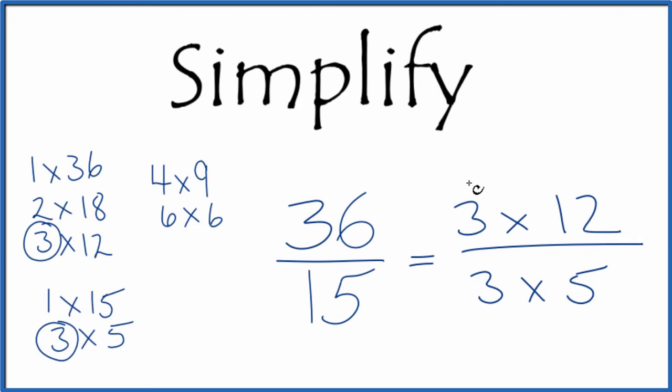Since we have 3 on the top and the bottom, get rid of those, we end up with 12 over 5. And we can't reduce this any further, these are the simplest terms.